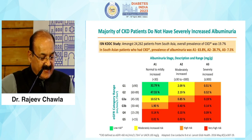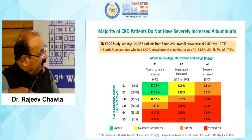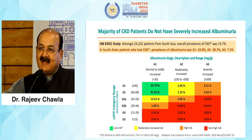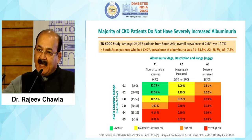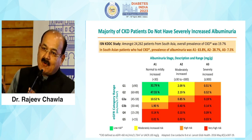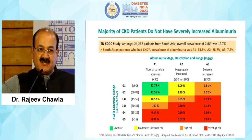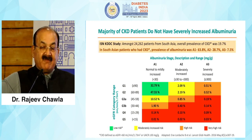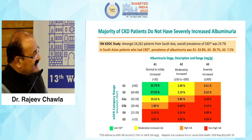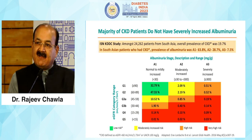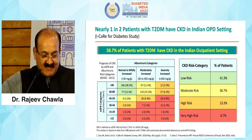An interesting ISN KDTC study on 24,000 patients said that the majority of CKD patients don't have severely increased albuminuria. In southeast Asian patients, albuminuria may not be very high even at moderate to severe renal insufficiency. In fact, almost 64 percent of patients were still in category A1 when they already had CKD. Only two-thirds had advanced albuminuria of more than 300 milligram.